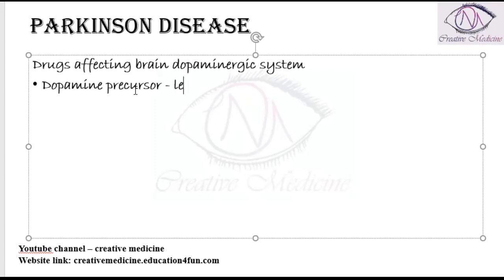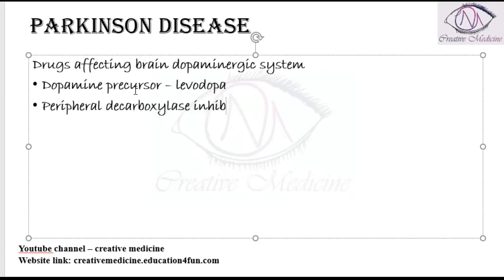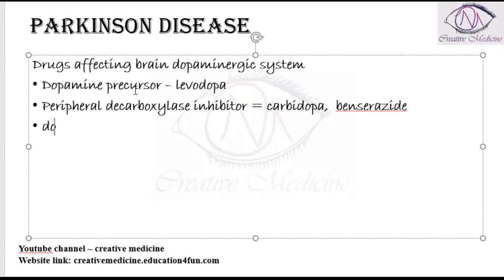The dopamine precursor includes levodopa. We also have peripheral decarboxylase inhibitors, like carbidopa and benserazide, which are peripheral decarboxylase inhibitors.